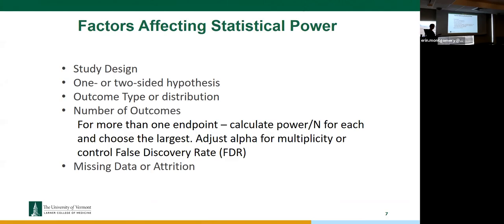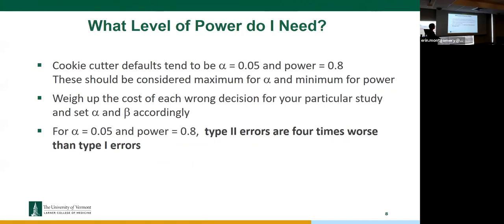Missing data or attrition from your study is another consideration. When planning a sample size, you can fix the power and find out what sample size you need, or you can fix the sample size and find out what power you can achieve. We always have to account for missing data, particularly in human research, because we lose participants from studies. You typically build in some kind of attrition rate depending on your design.